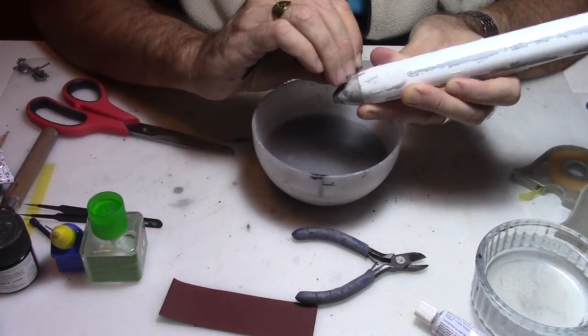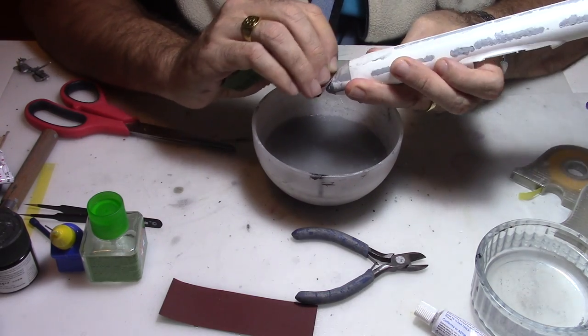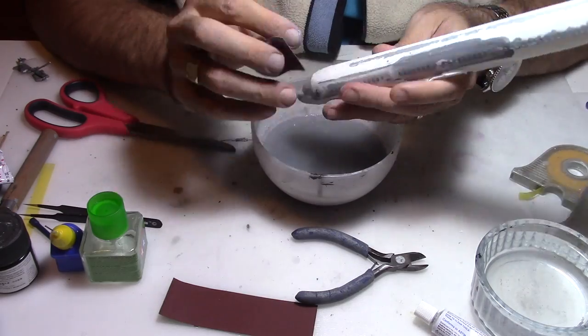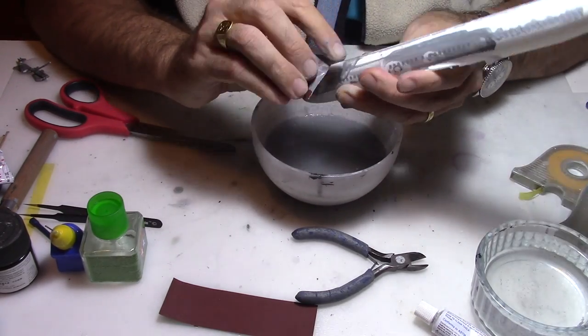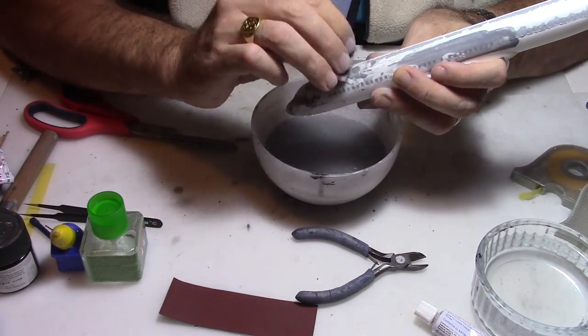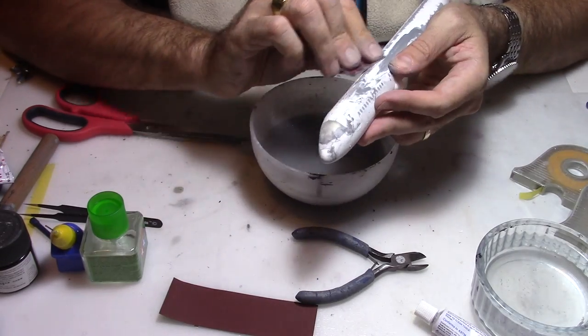Now that the Tamiya putty has dried out, it's time to remove the excess putty on those gaps. We're going to use initially a 600 grit sandpaper, then later 800 to smooth it down. We're going to start that long and painful process of sanding down the model.